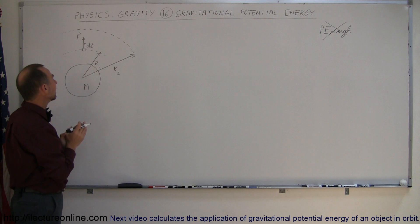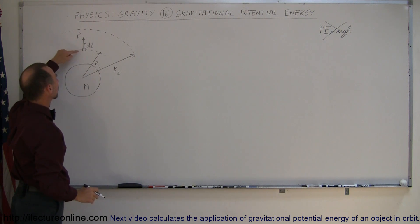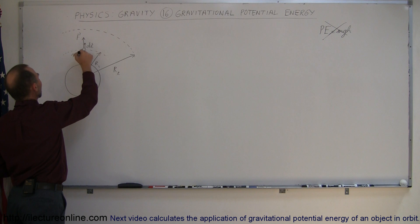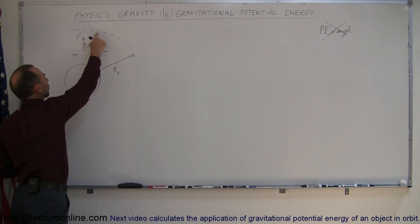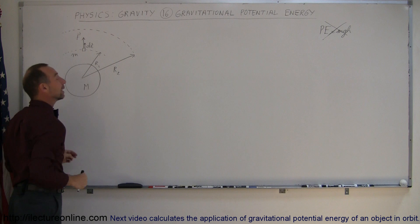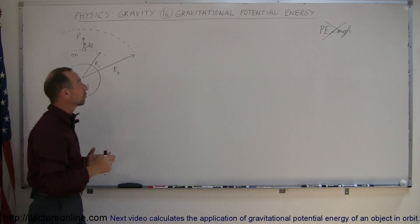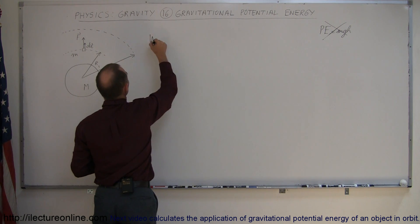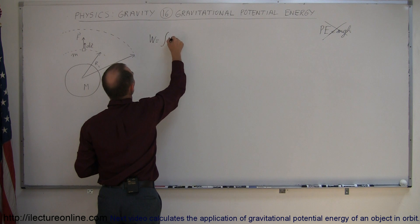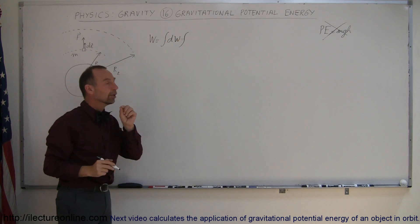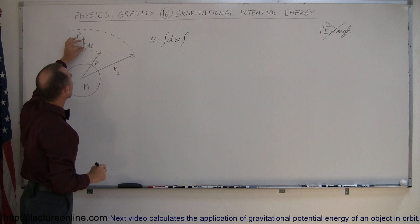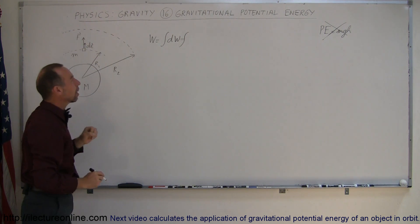What we have to do instead is calculate the work done to get an object — let's say this object has mass m — and move it from one orbit where the radius is r1 to another orbit where the radius is r2. The work done is going to be equal to the integral of all the little dWs — all the small amounts of work done by moving this mass incrementally through small little drs.